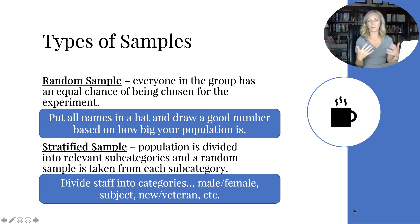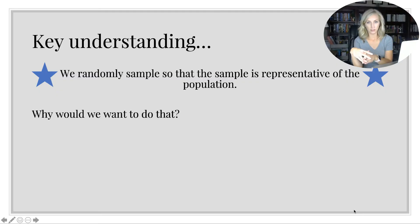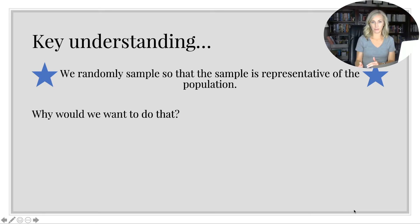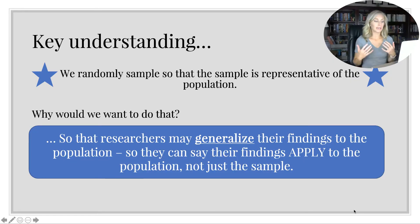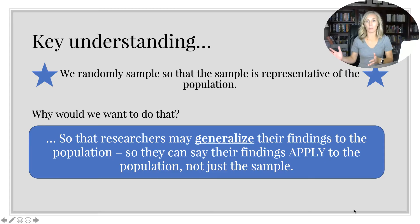For a stratified sample, you'd divide the staff into categories like male/female, by subject, new or veteran, and then randomly sample by drawing from a hat from each of those categories. The key understanding: we randomly sample so that the sample is representative of the population. If it's truly random, everyone has an equal opportunity of being chosen, which makes it representative. Researchers need to be able to generalize their findings to the population — to say that what's true of the sample is also true of the population.